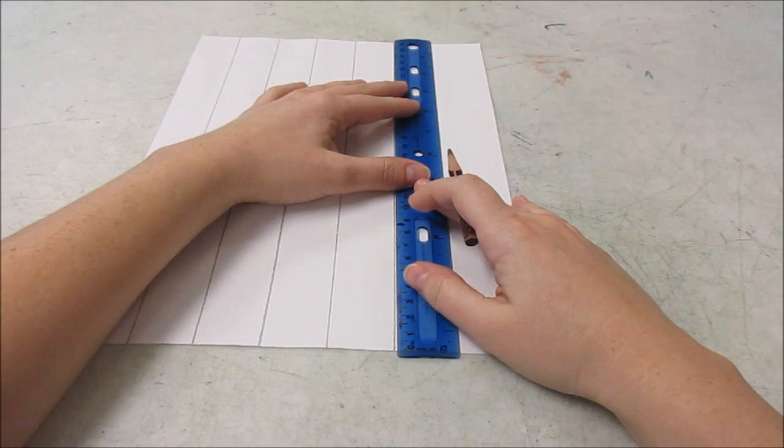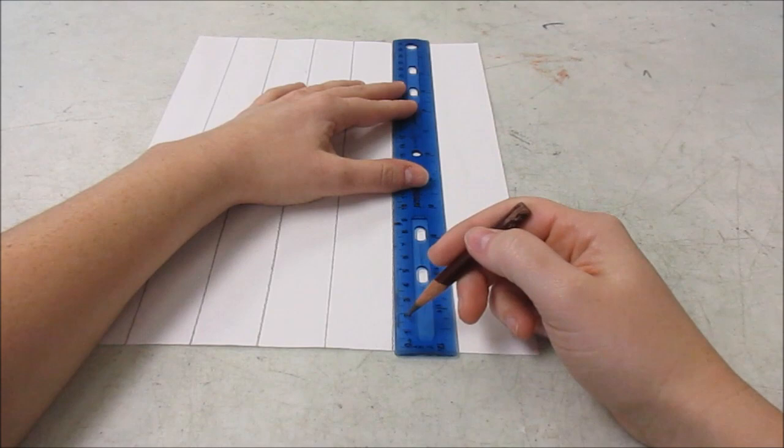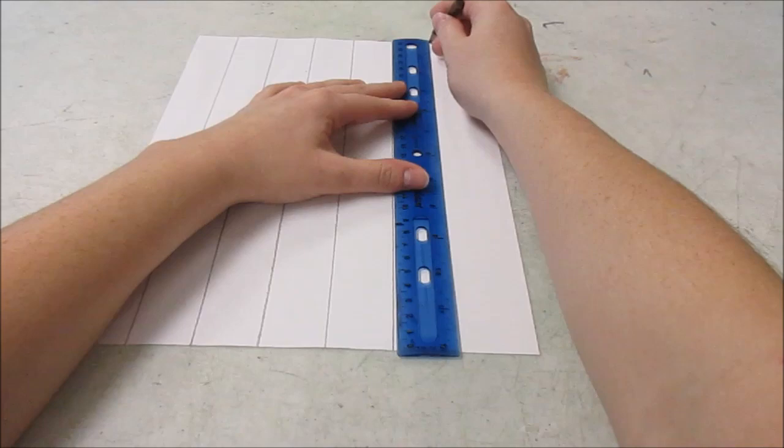Make sure when you're lining it up, it's lined up the whole way across. Don't let it be crooked like that. So we want straight across lines.